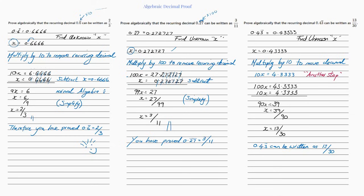And finally, prove algebraically that the reoccurring decimal 0.43̄ can be written as 13 over 30. This is slightly different — we've got a different reoccurring number only on the 3 at the very end. So let's find our x: x equals 0.43333, and the dot is on the 3. First I want to move over that 4, so I'm going to multiply by 10 to move the decimal over. So now I have 10x equals 4.3333 reoccurring.